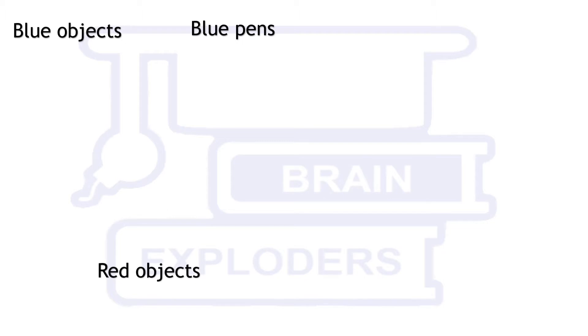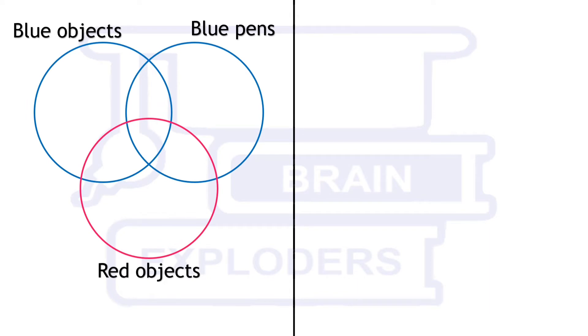Here are some examples which will help us get things more clearly. Suppose we have to draw these diagrams for blue objects, blue pens, and red objects.